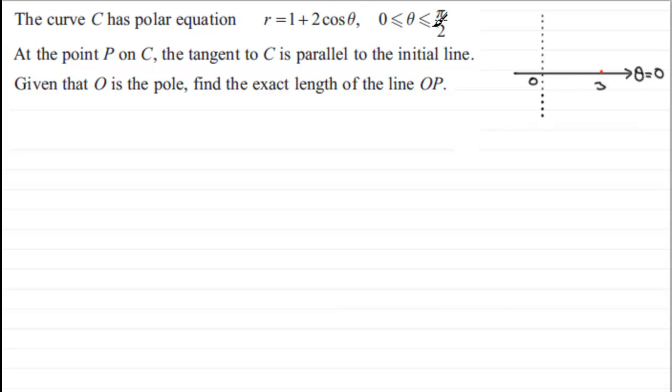And when theta equals pi upon 2 radians, we've got the cosine of pi upon 2 is 0, so r is just going to be 1. So if we mark that in as 1 when we get there, then what you've got is a curve looking something like this. Now, the point where we've got the tangent is parallel to the initial line on this curve is going to be the point P, which we're going to say is there, because the tangent to the initial line will be like so.